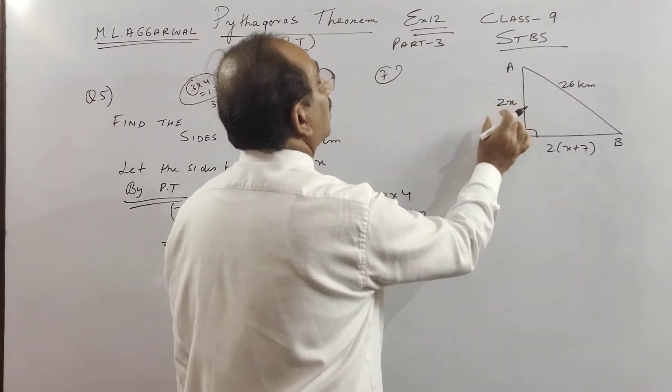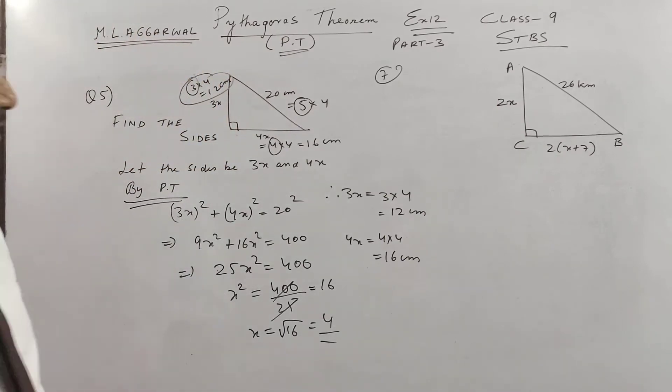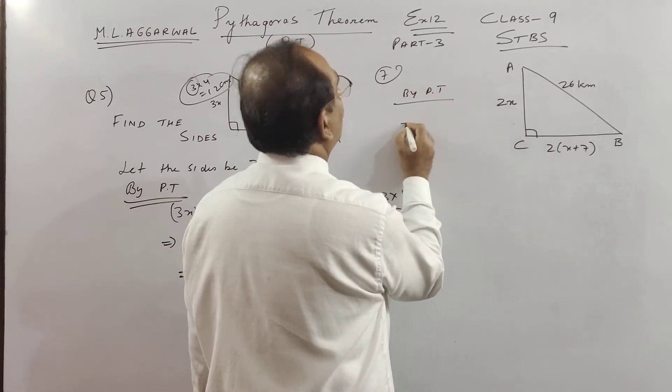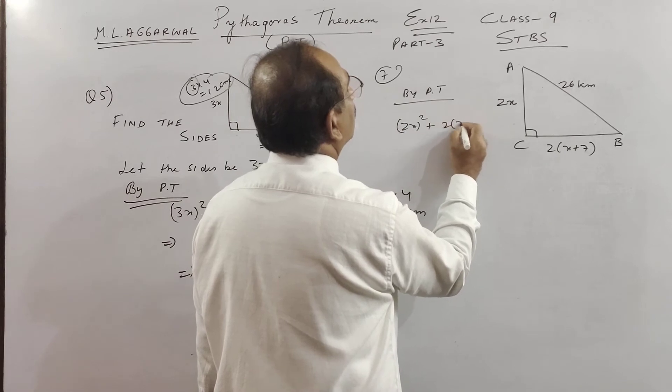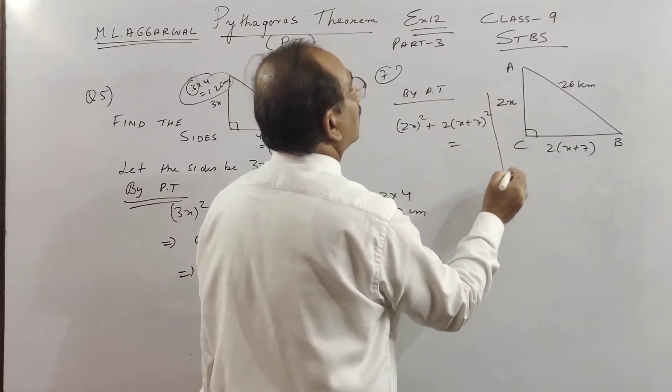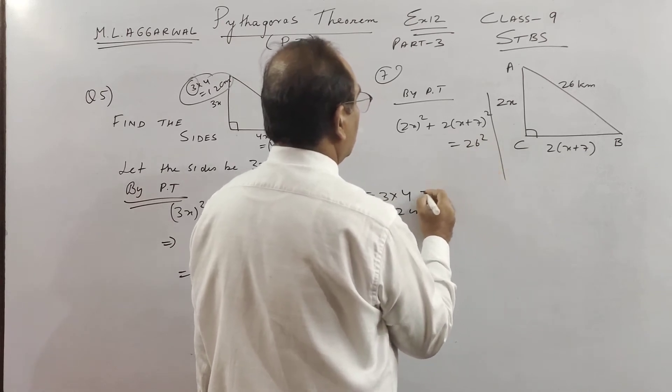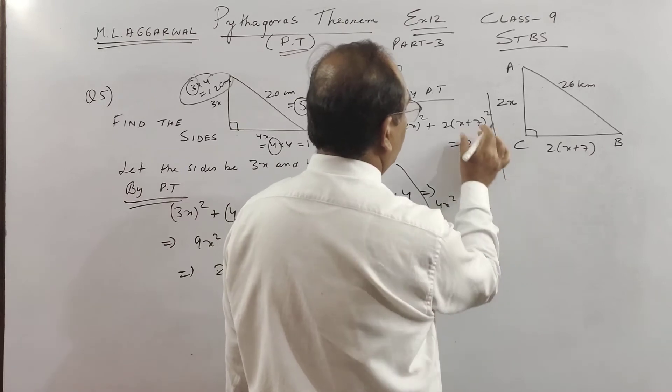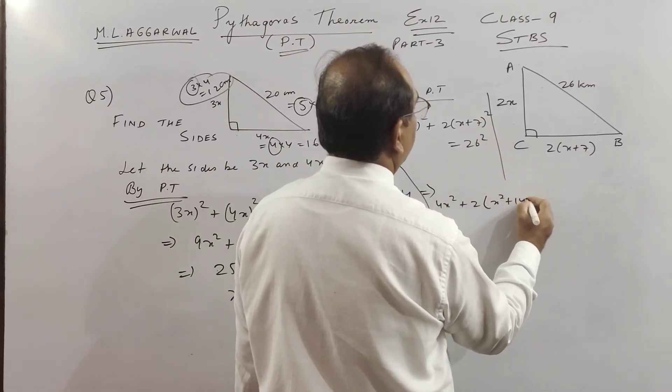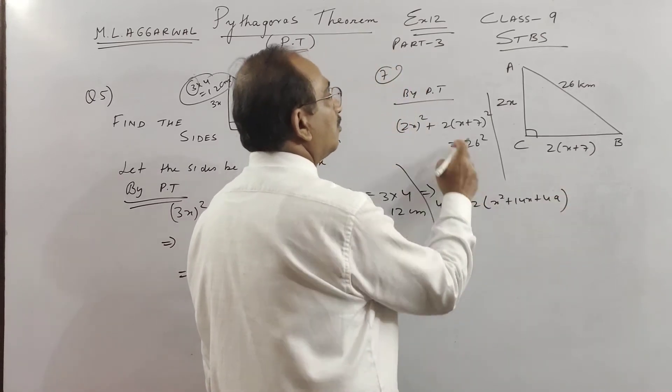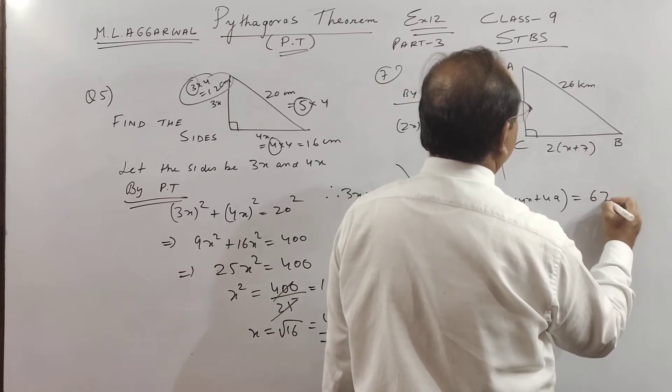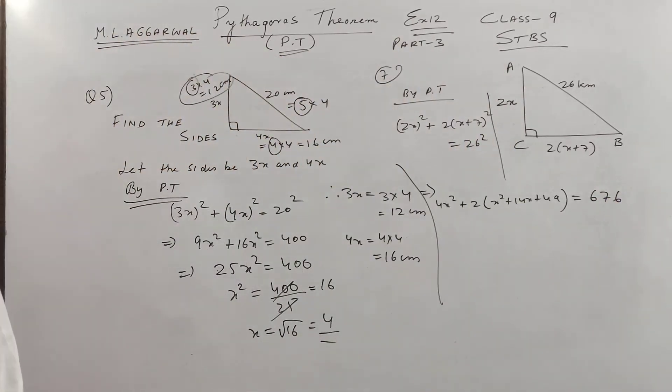So again if you see what is given, if you see the wording, 2x is given and I think this is also given, so by Pythagoras theorem if you see children 2x whole square. So this is like solving like an equation children, so this is 26 square. So here what we get children 4x square.